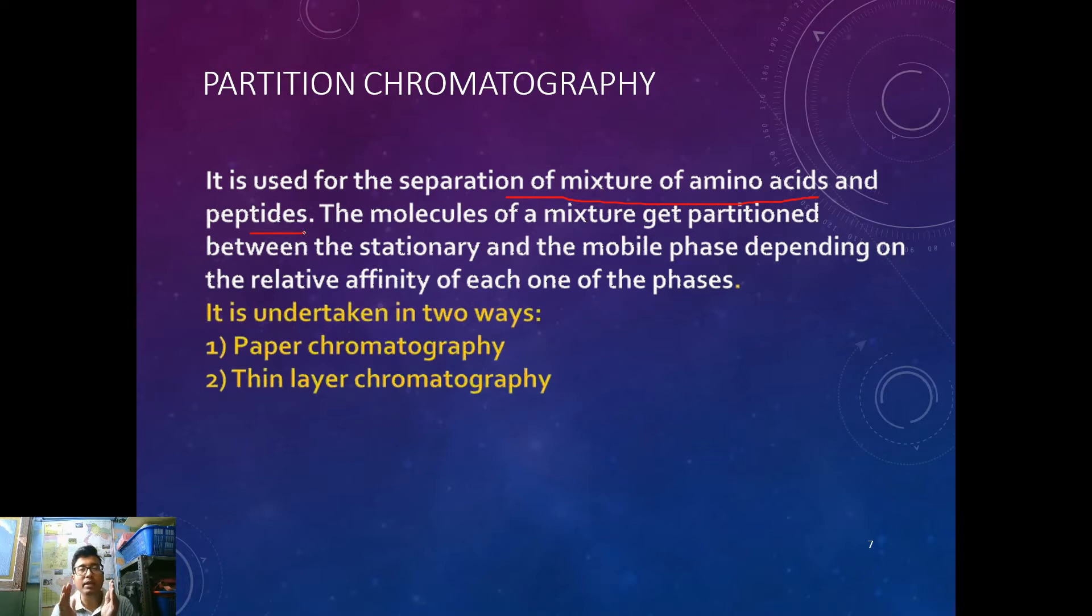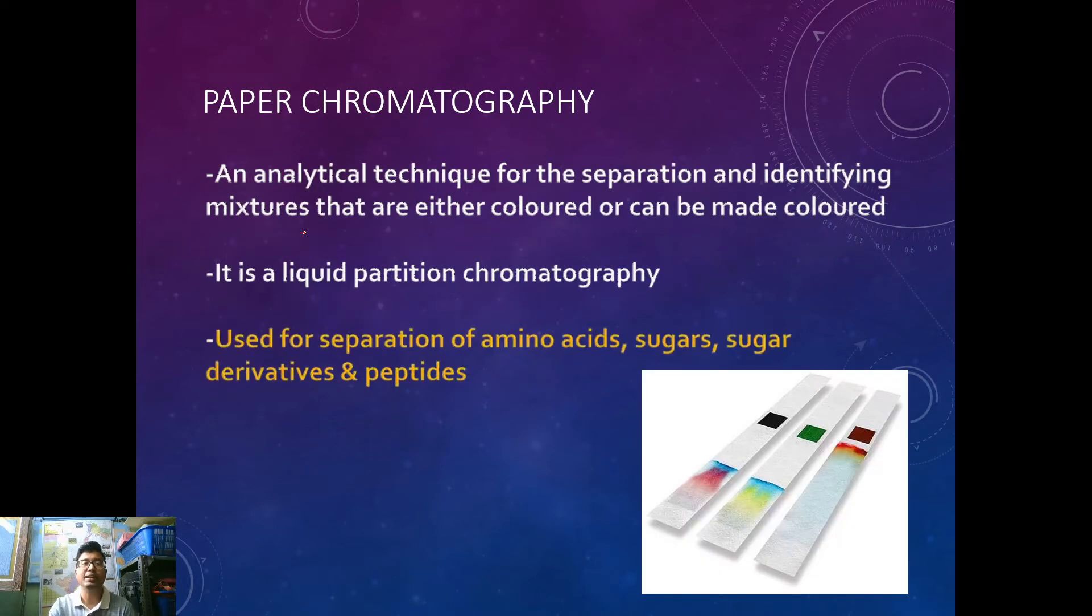The principle being the molecule will get partitioned between the stationary and mobile phase depending on the relative affinity to each one of these phases. It can be done in two ways: number one, paper chromatography and number two, TLC. So let us discuss these two one by one.